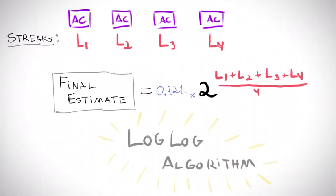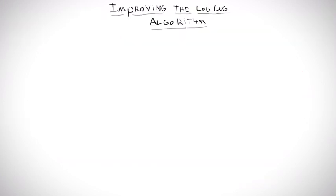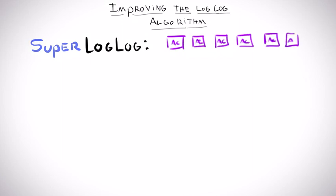But the log-log algorithm can still be improved, as can its name. Its main problem is being too sensitive to outliers. If only a few of the counters are too big, it drives the whole average up by a lot. To solve this, the same creators of log-log proposed the super-log-log algorithm, where we simply replace the average of all the counters by only the average of the top 70% counters, excluding the big outliers.